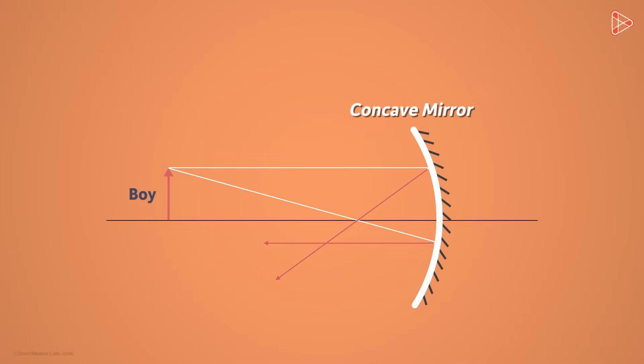Or we can say that they are converging at this point. And the image of the top of the arrow is formed at this point.